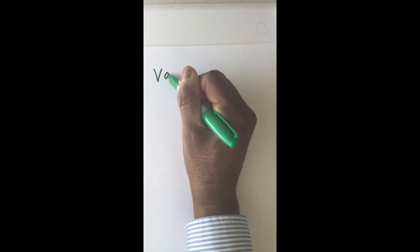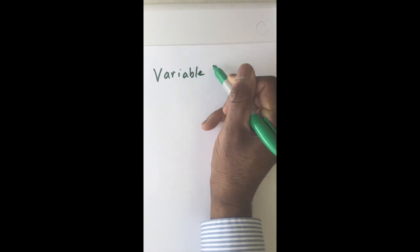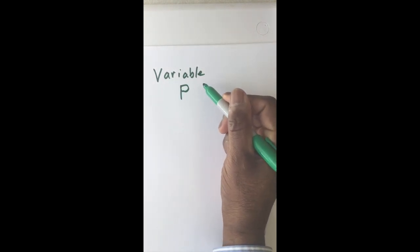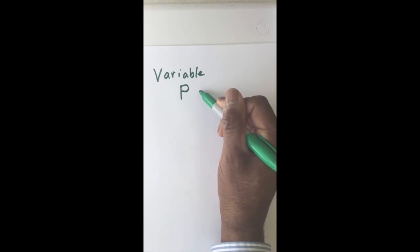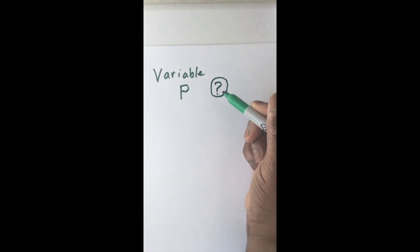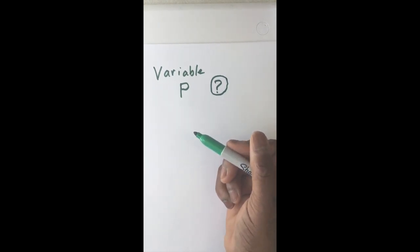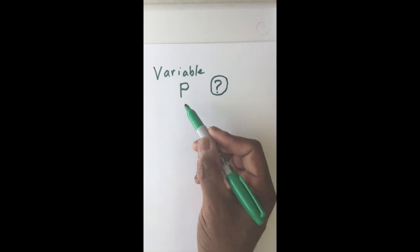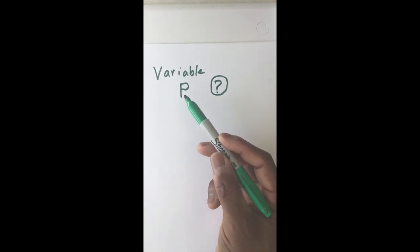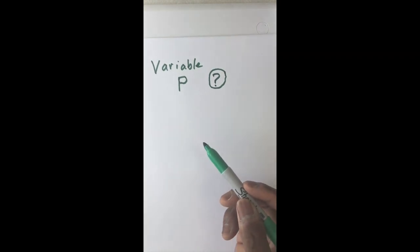So remember, a variable is a letter — in this case we use P — that represents something we don't know. Remember, I wrote the number down on the piece of paper, I folded it up, and I wrote P. A variable is a letter that represents something that we don't know.